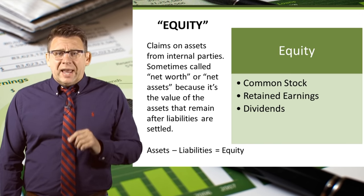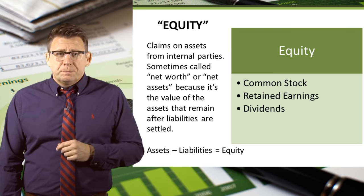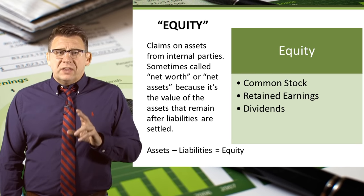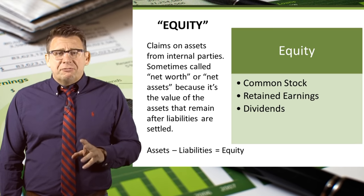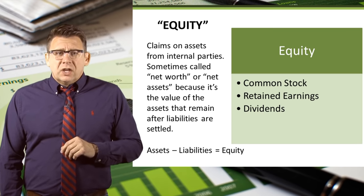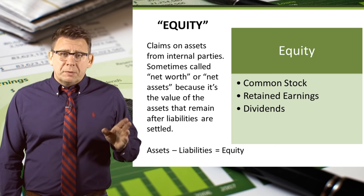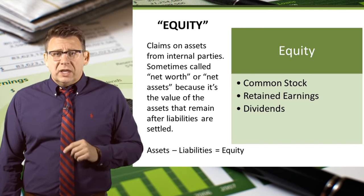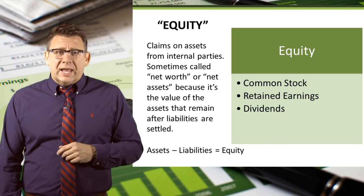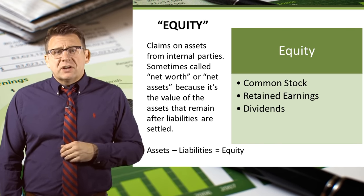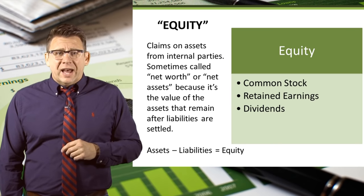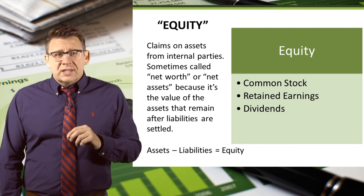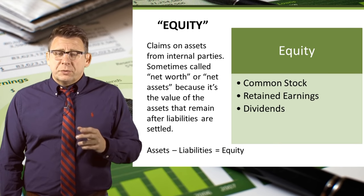Equity is the claim on assets from internal parties like owners. It is sometimes called net worth or net assets because it's the value of the assets that remains after our liabilities are paid off or settled. The accounting equation can be manipulated to be assets minus liabilities equals equity, or net worth, or net assets. Retained earnings are the amount of earnings the company has retained rather than paid out to stockholders in the form of dividends. Dividends are the amount of earnings the company has paid out to stockholders as a return on investment.